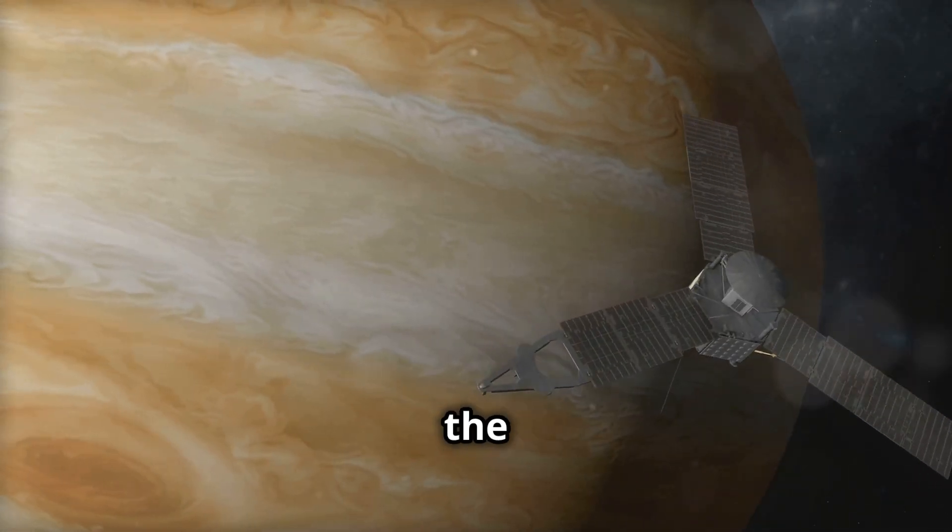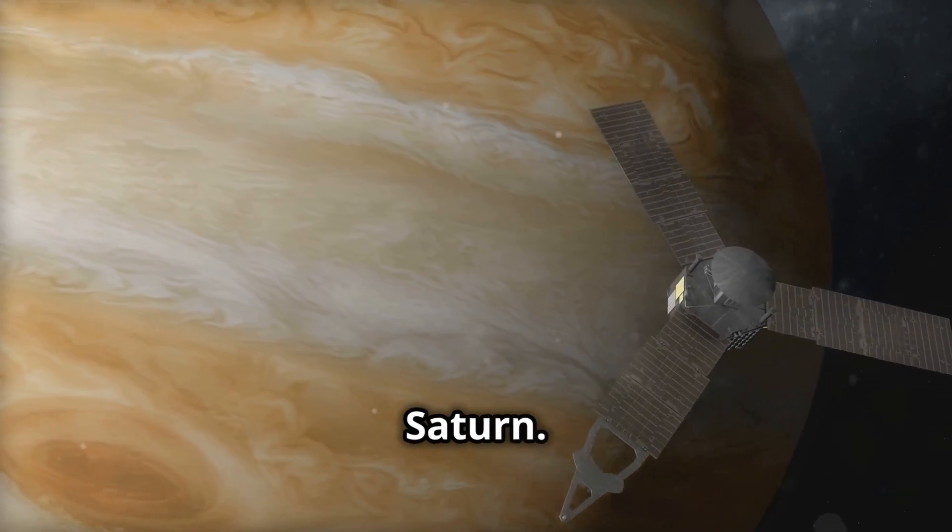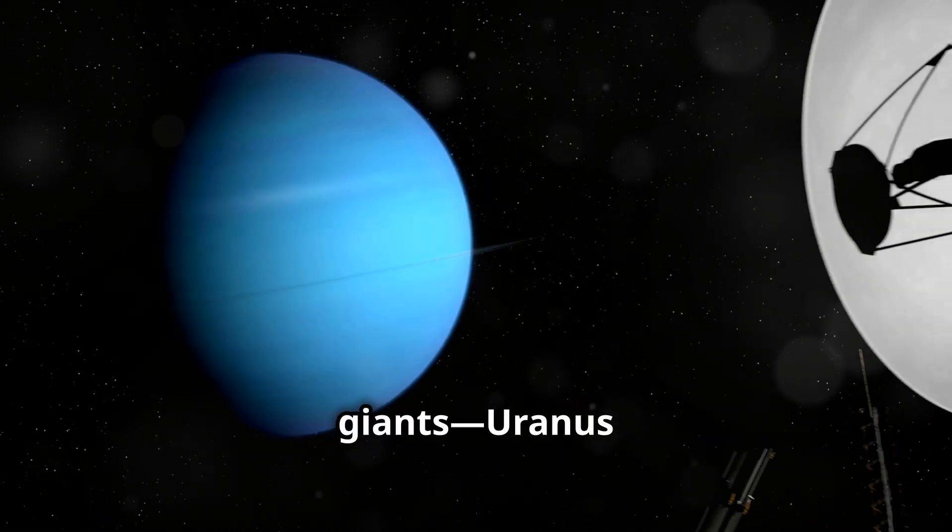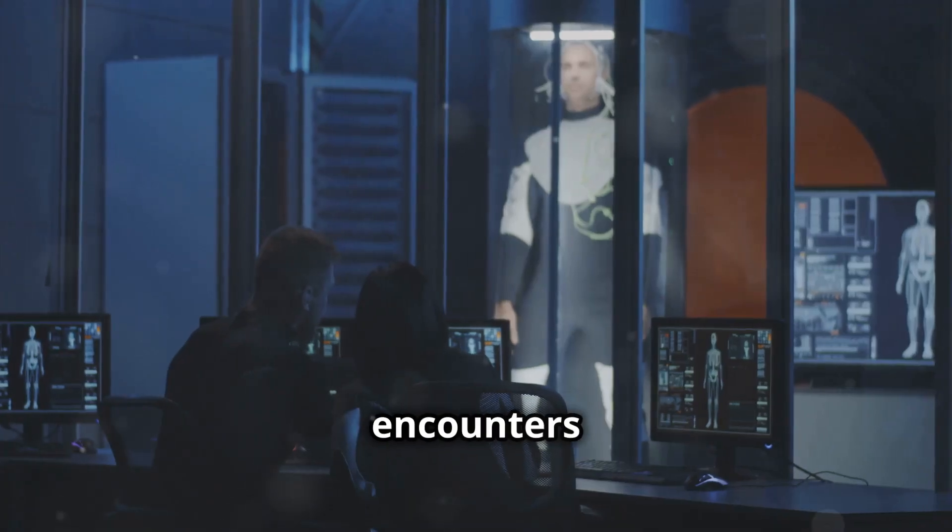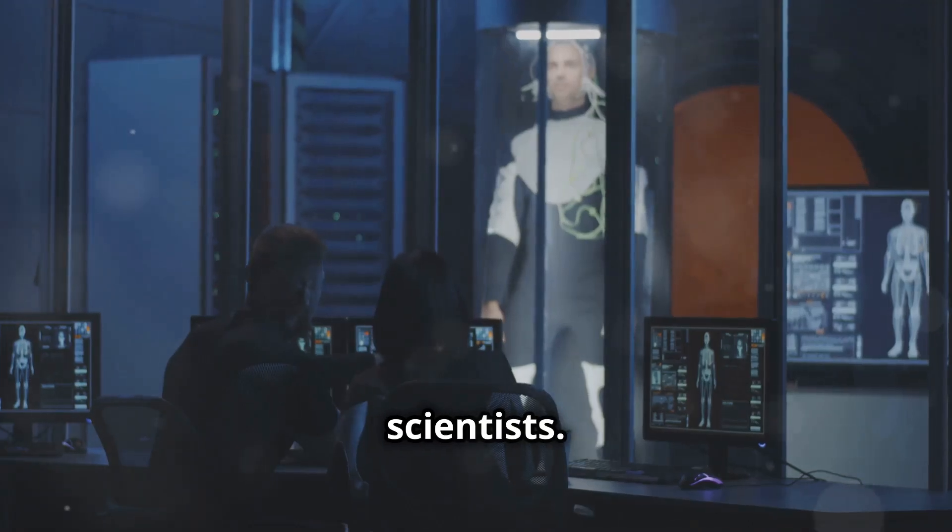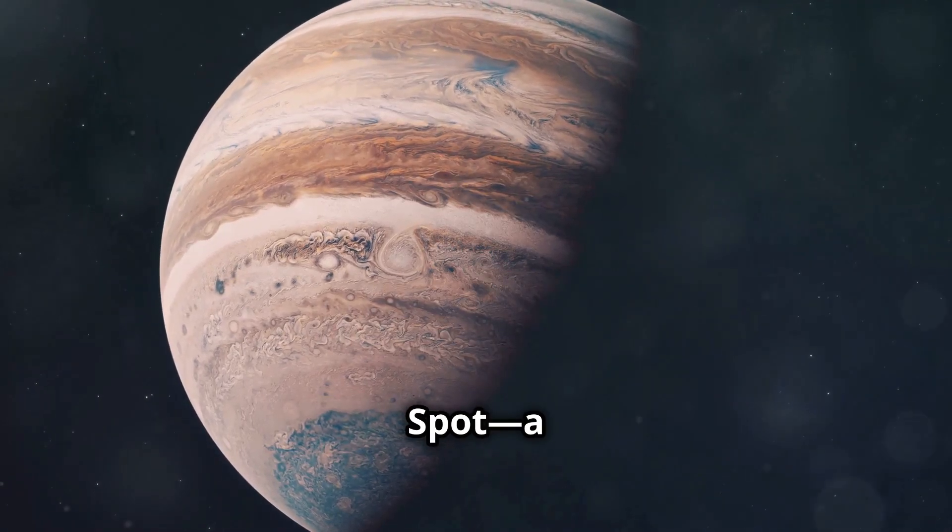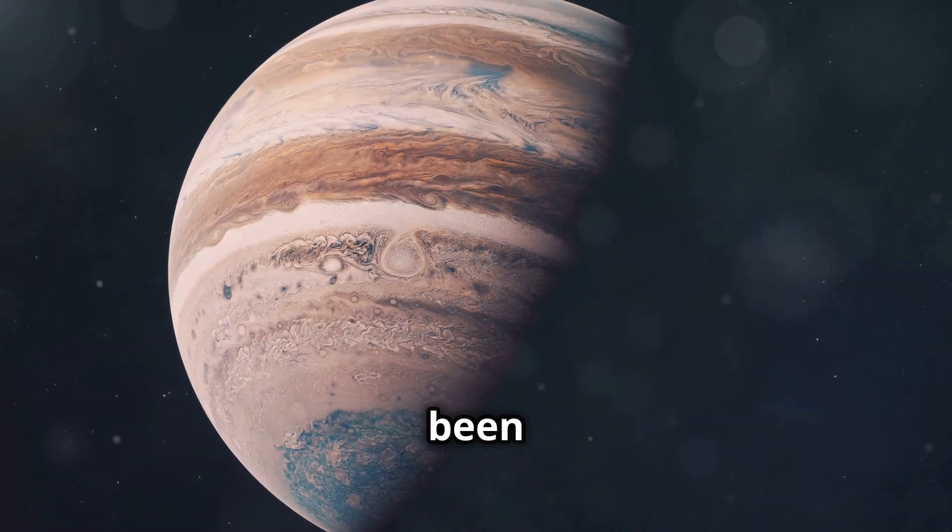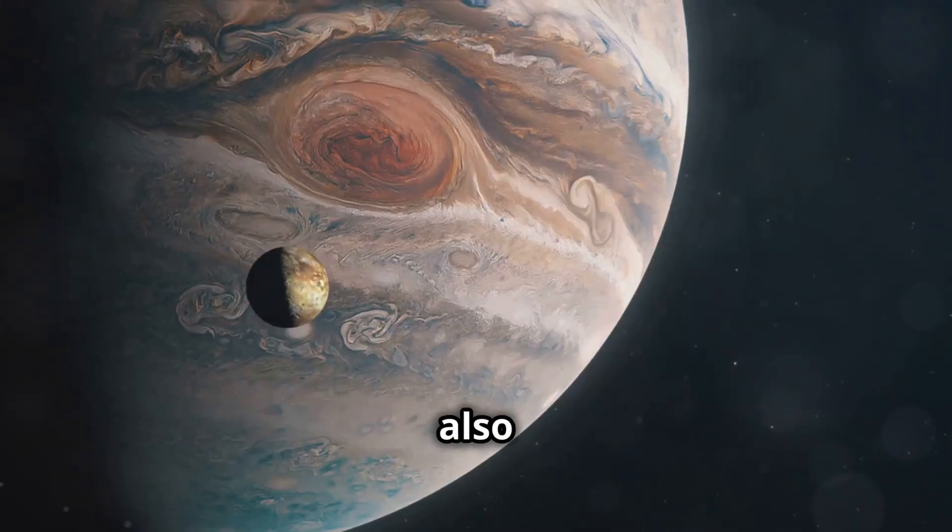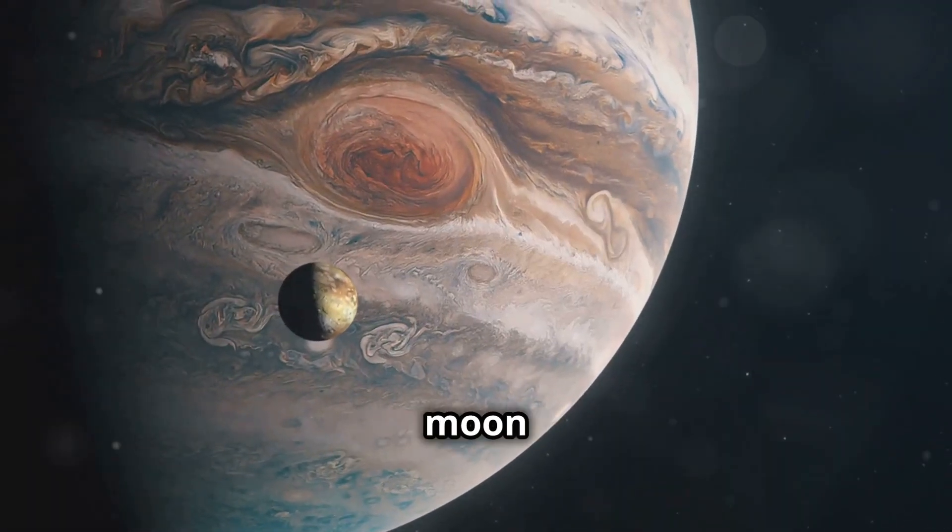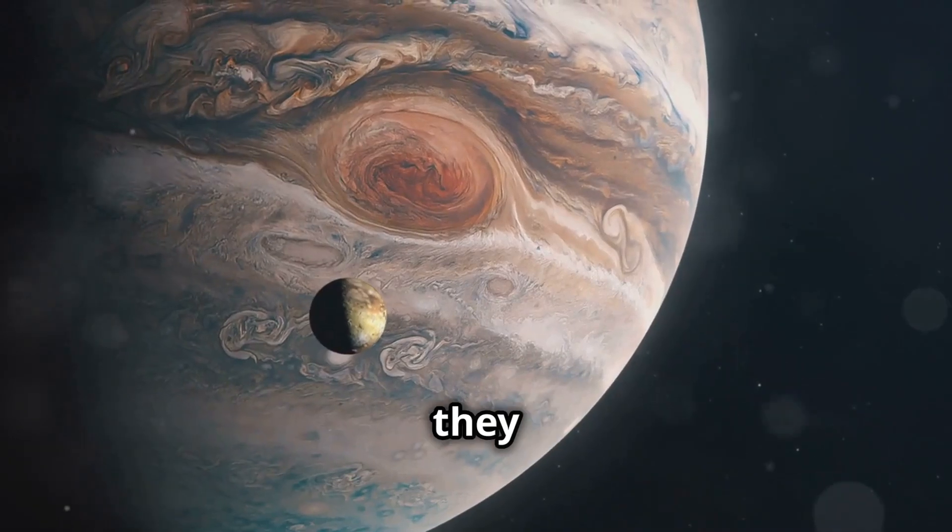Voyager's journey took it past the gas giants, Jupiter and Saturn, and the ice giants, Uranus and Neptune. These encounters revealed groundbreaking discoveries that shocked scientists. At Jupiter, Voyager discovered the Great Red Spot, a storm larger than Earth that's been raging for centuries. It also showed us Io, a volcanic moon with eruptions so powerful they shape its atmosphere.